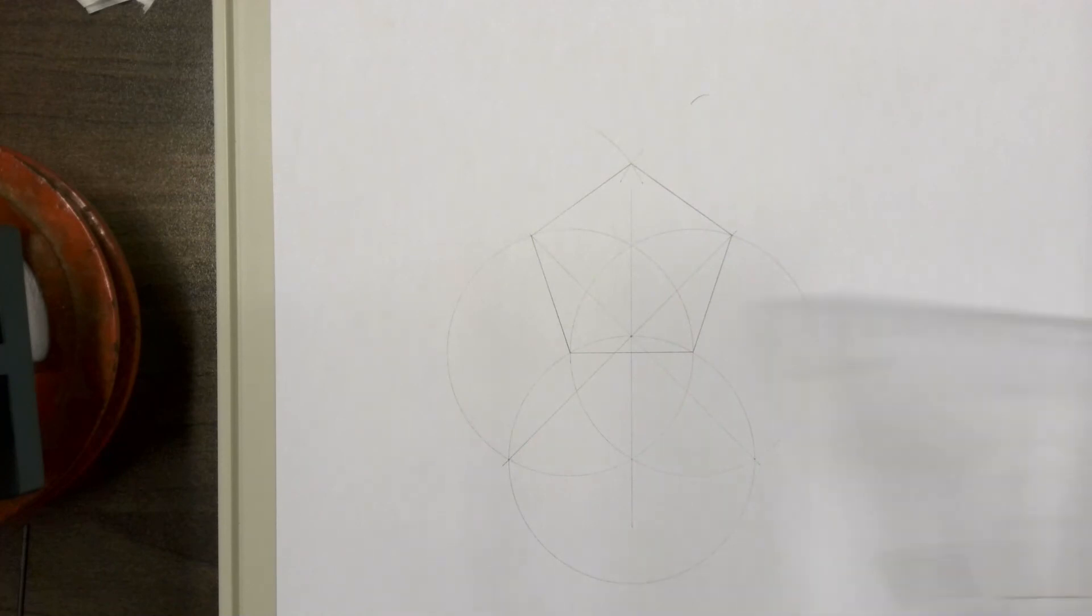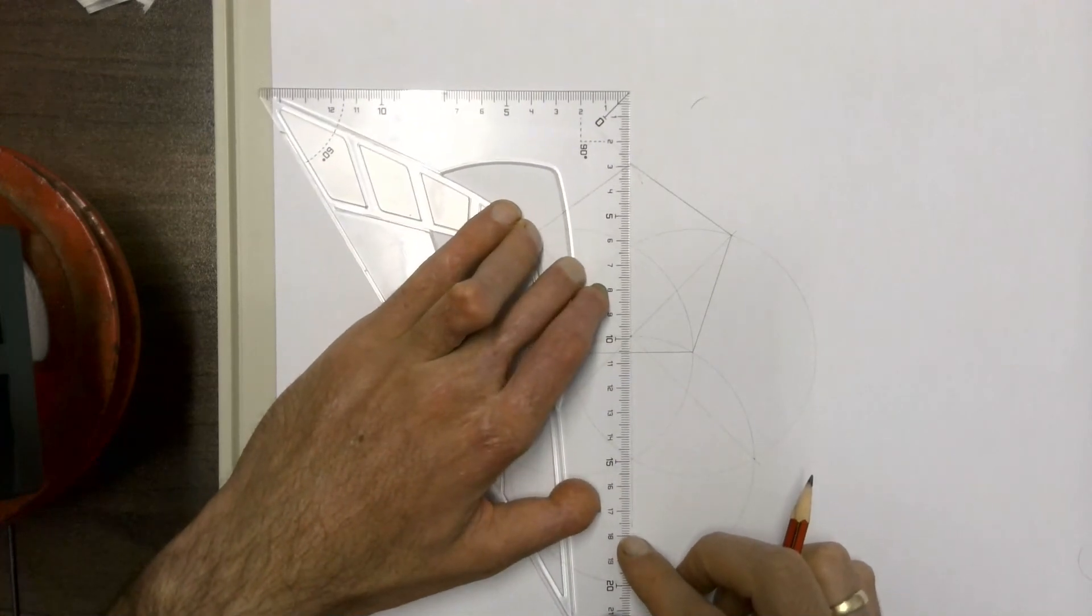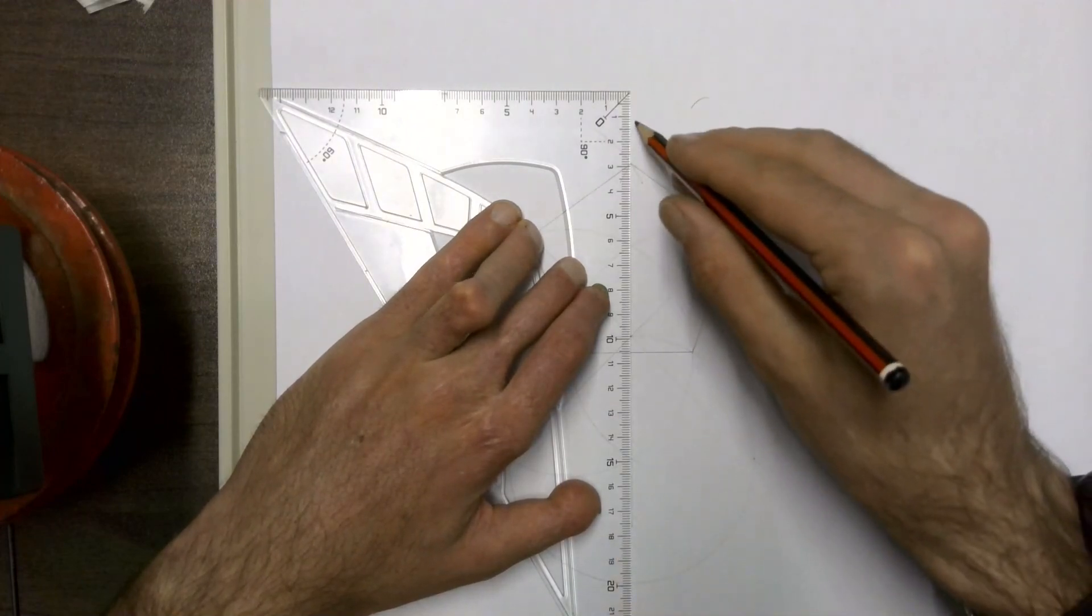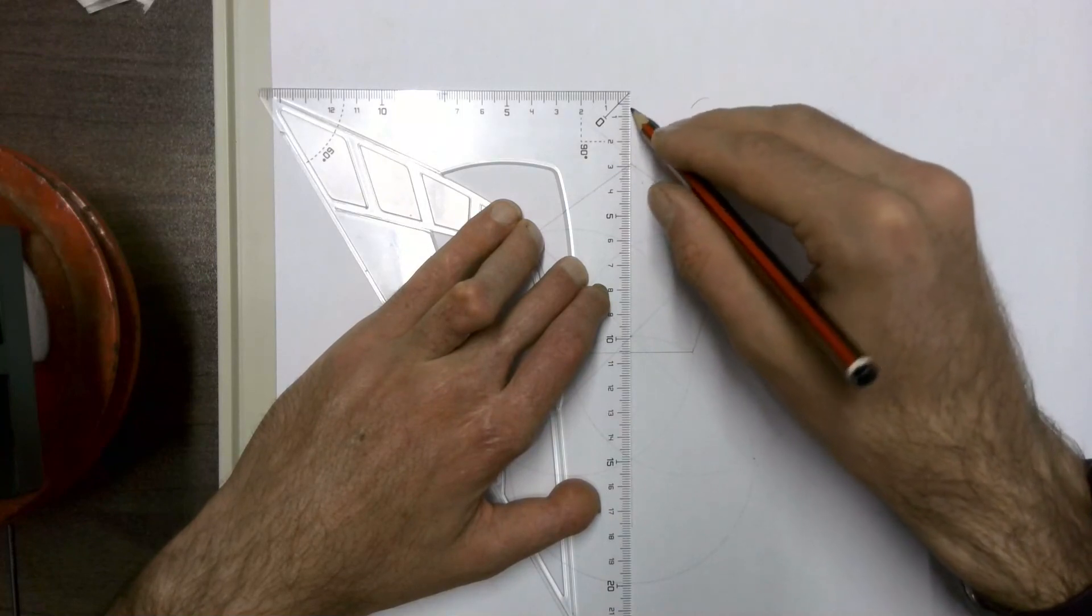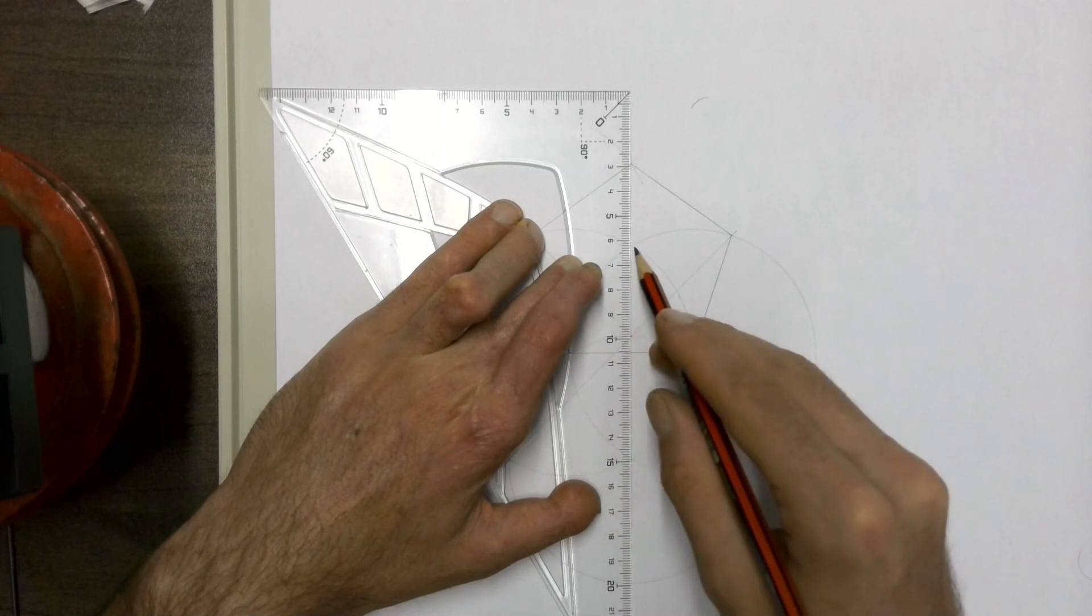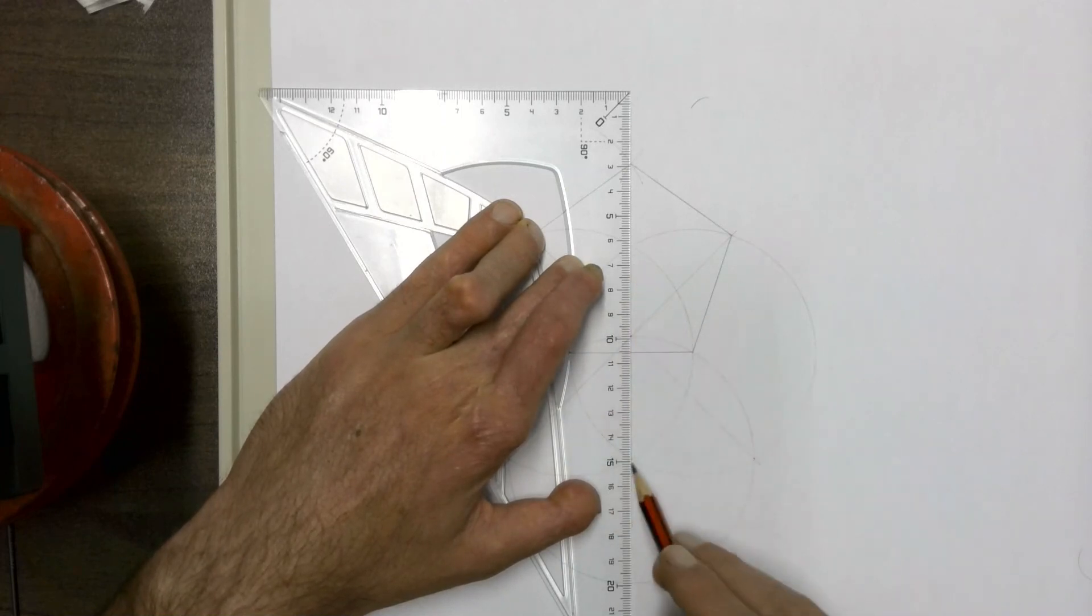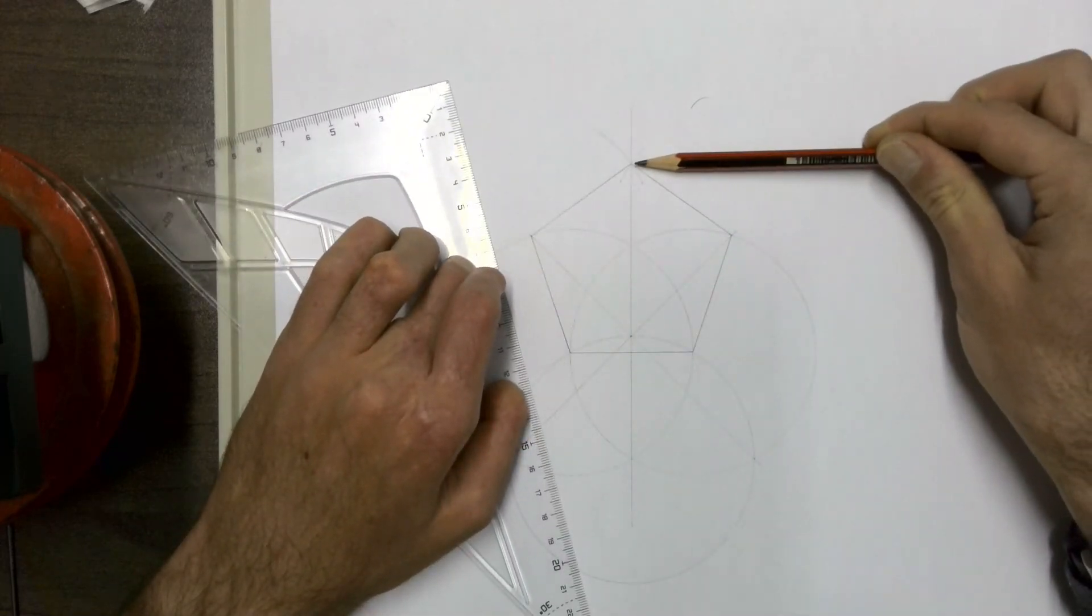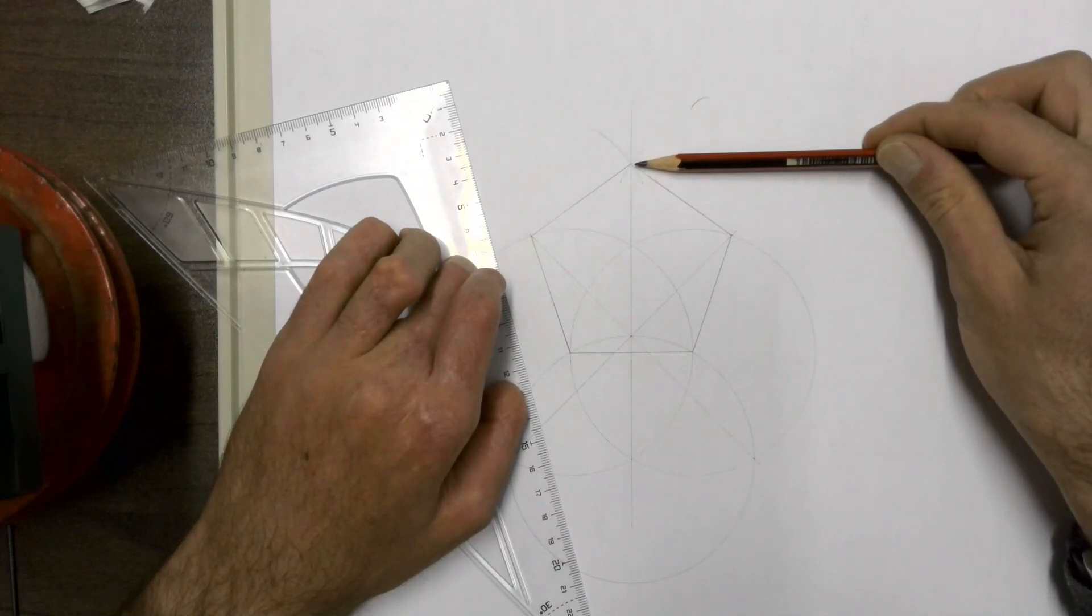To double-check how accurate your construction is, you can do two things. Number one, measure all the sides—they all have to be exactly the same length. Number two, if you extend that line you used to join your two intersecting points between your circles at the beginning upwards, it should intersect perfectly where those two arcs came together to give the top point of your pentagon. If it doesn't intersect perfectly, then your pentagon is inaccurate.